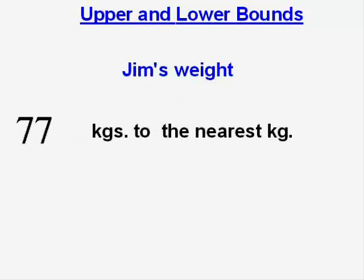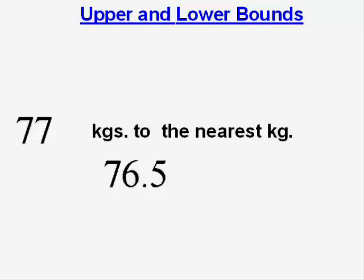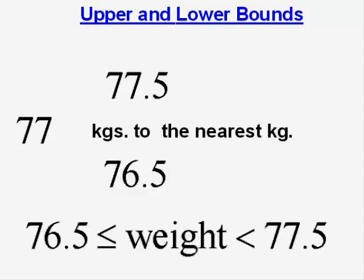Let's now look at some more examples. Jim has measured his weight and finds that it's 77 kilograms to the nearest kilogram. Now that means his weight is going to be half a kilogram either way of that. So the lower bound of his weight is going to be 76.5 kilograms. The upper bound 77.5 kilograms. And another way of putting that would be that his weight is in between those two values.